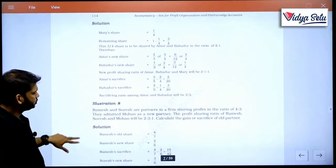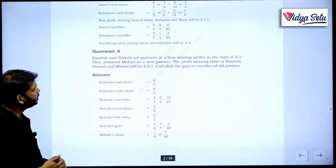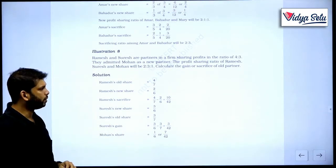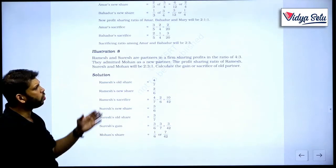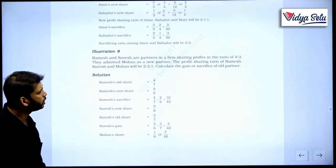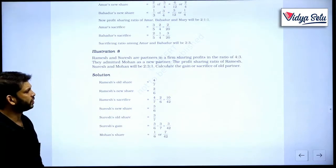The last one, illustration 8. Ramesh and Suresh are partners in a firm sharing profits in the ratio 4 is to 3. They admitted Mohan as a new partner. The profit sharing ratio of Ramesh, Suresh and Mohan is 2 is to 3 is to 1. Calculate gain or sacrificing.